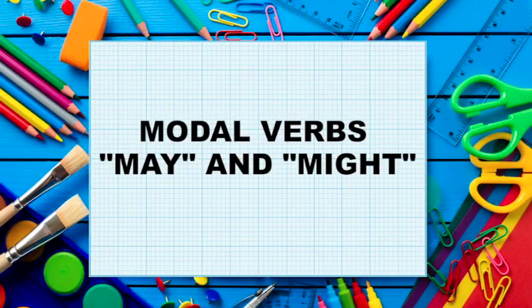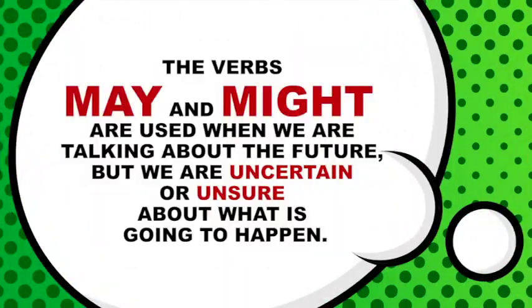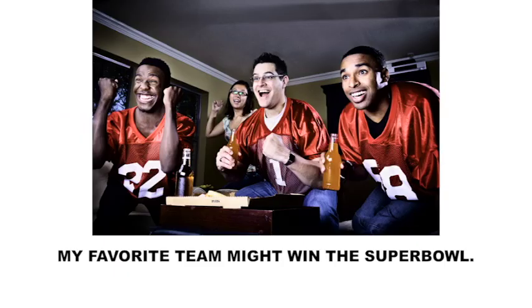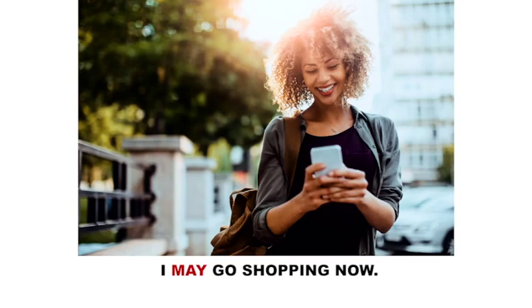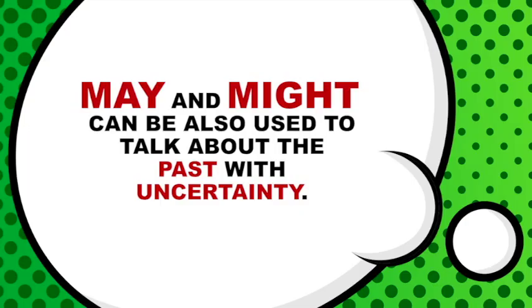Modal verbs may and might. Let's take a look at some of the modal verbs. The verbs 'may' and 'might' are used when we are talking about the future, but we are uncertain or unsure about what is going to happen. In the sentence 'my favorite team might win the Super Bowl,' the modal verb 'might' expresses a little bit of doubt about the outcome of the big game. May and might can also be used to talk about the present with uncertainty. For example: 'I may go shopping now.'